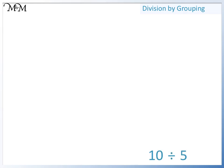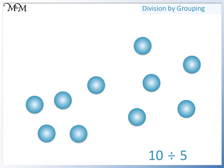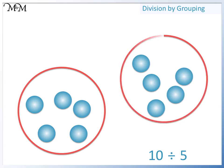Here we have 10 divided by 5. So we'll start with 10 counters. We are dividing them by 5, which means we can divide them into groups of 5. This is one group of 5, and this is 2 groups of 5. All together we have 2 groups, so 10 divided by 5 equals 2.